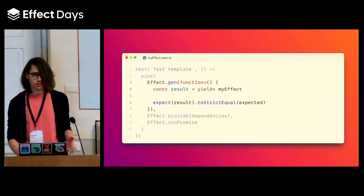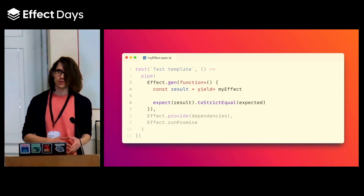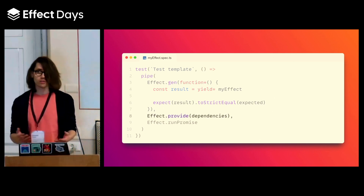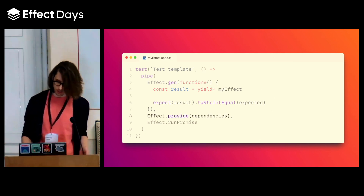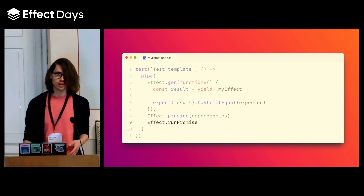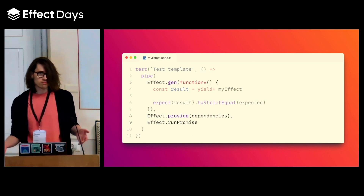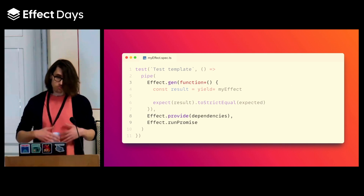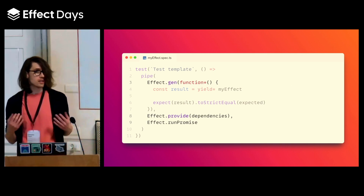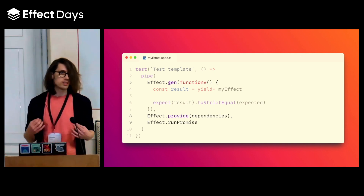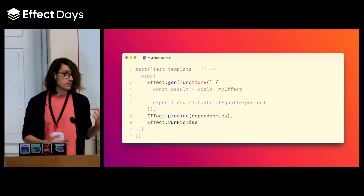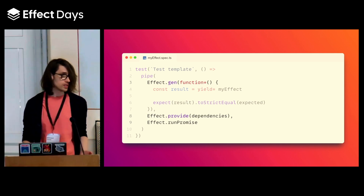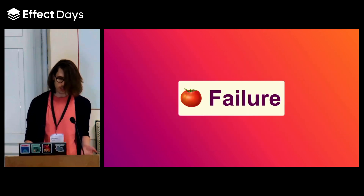Two: gen — that's where all the test code goes. Three: provide the required dependencies, if any. And four: run the effect. And that's it. Gen, provide, run/promise. Nothing fancy, but it's easy to parse visually, and it gives you a reliable structure. Every example in this talk is going to use it, starting with testing failure.